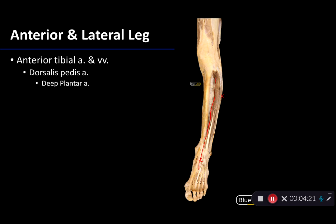The deep plantar artery feeds into the plantar arterial arch. That plantar arterial arch is an anastomosis between the deep plantar from the anterior tibial and the lateral plantar from the posterior tibial.